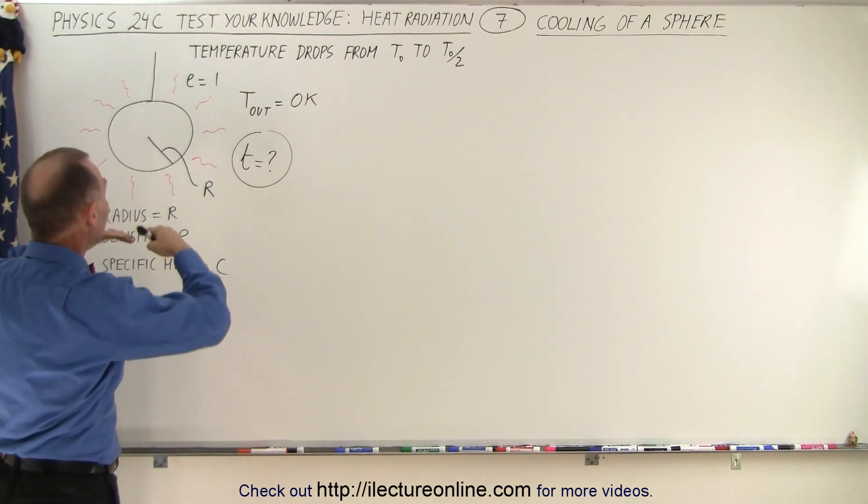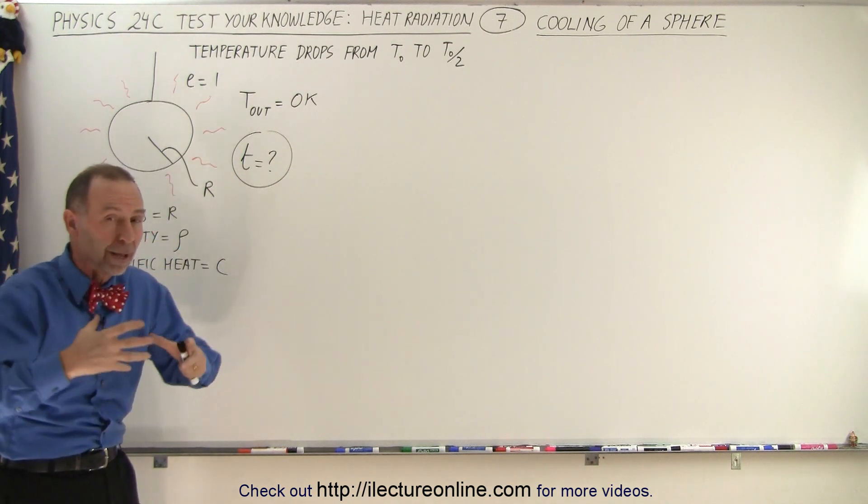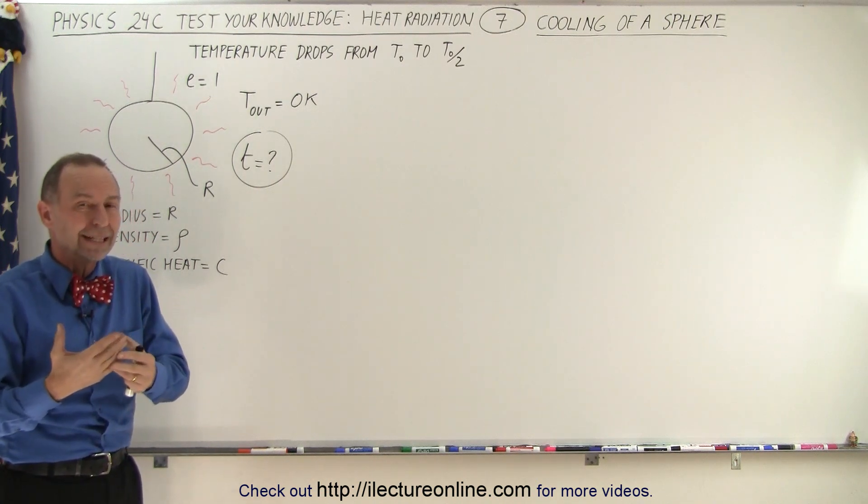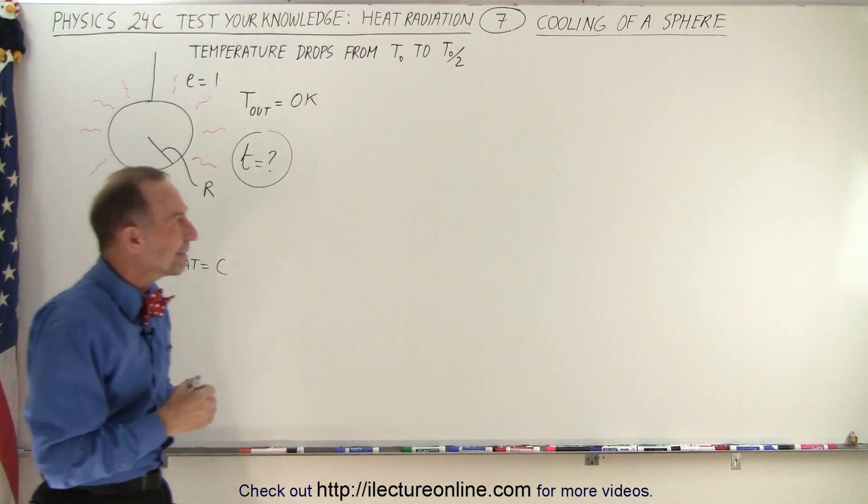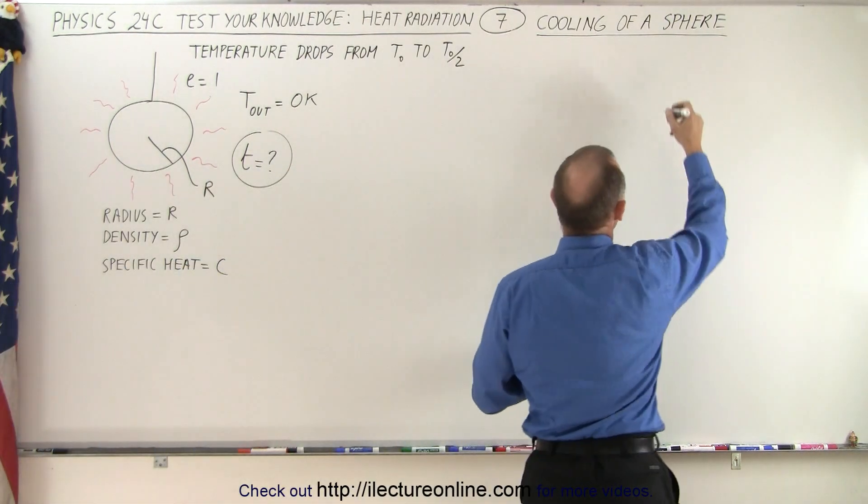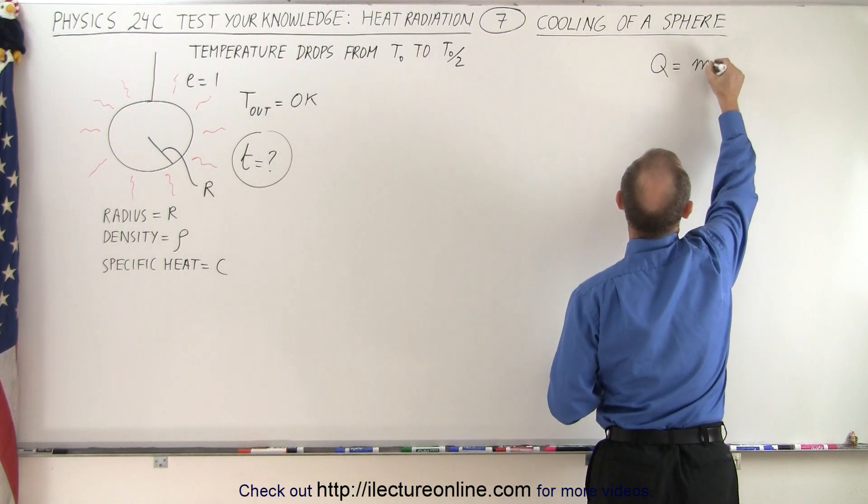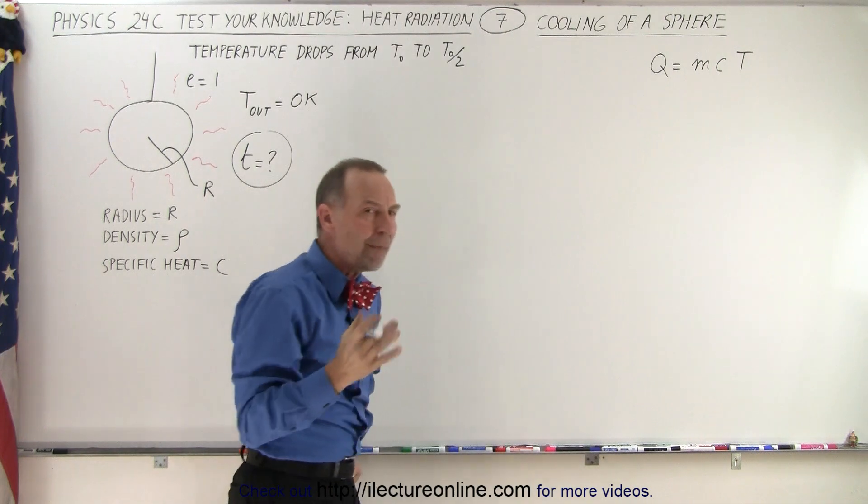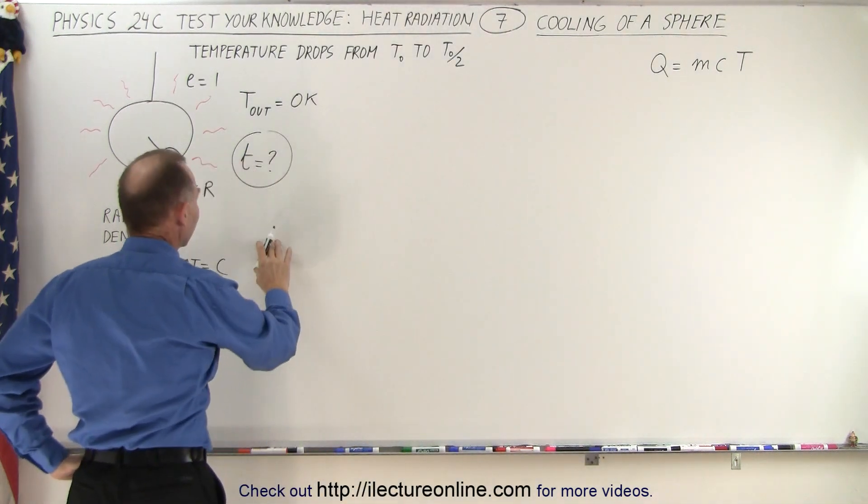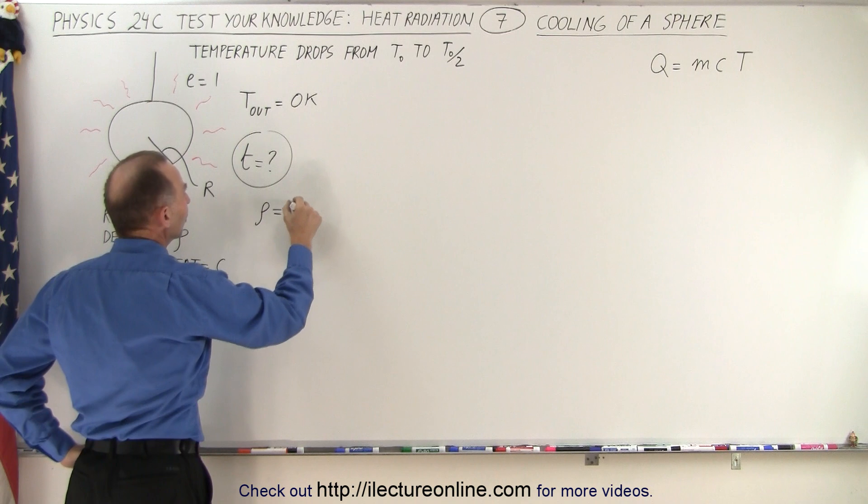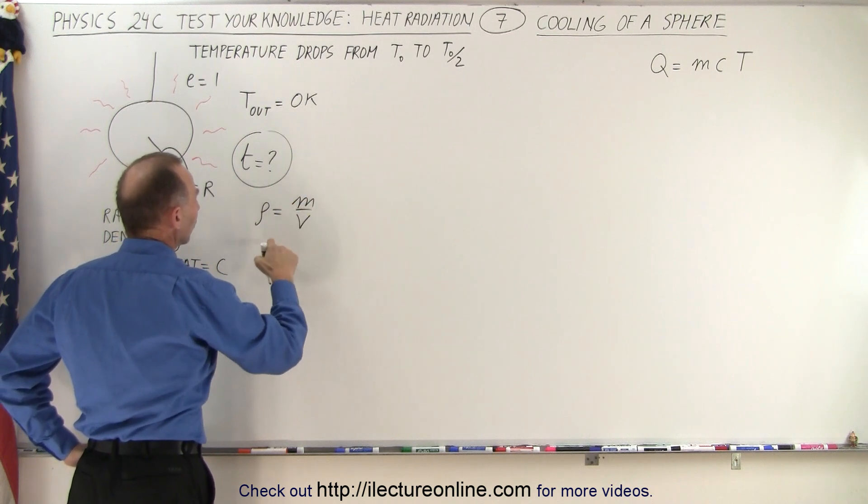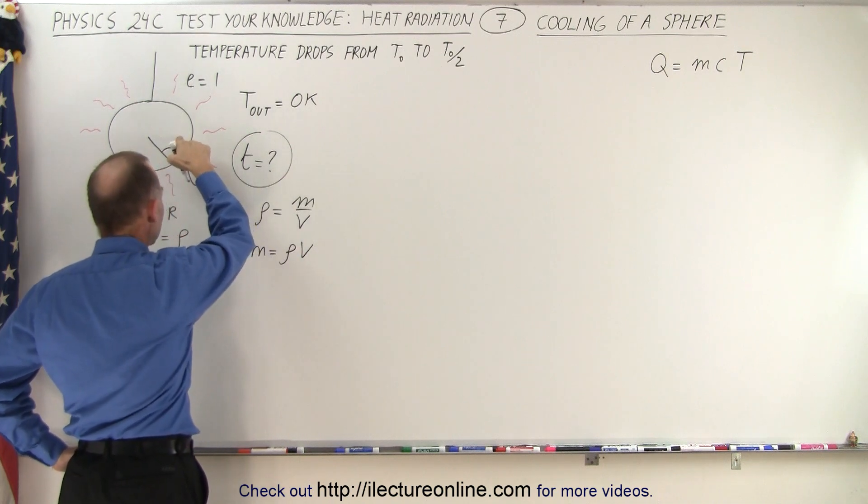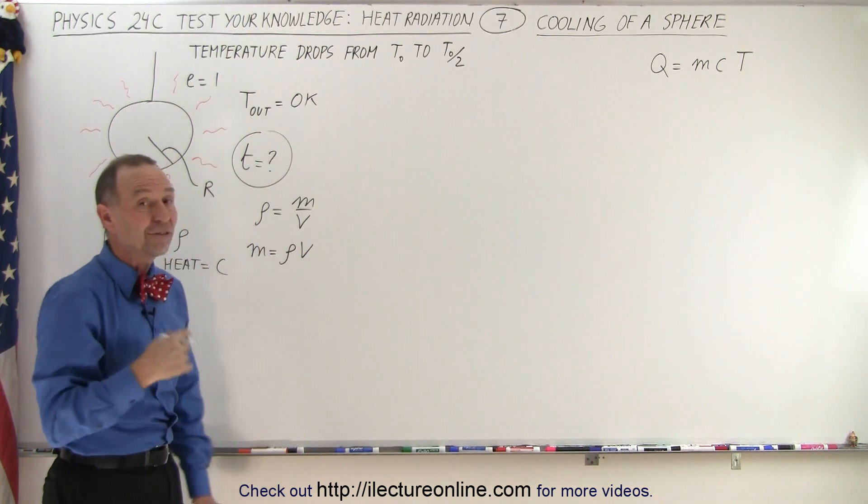First, we realize that the rate at which cooling occurs depends upon how much heat is contained within the object. So that deals with heat capacity and the calculation of heat contained within it. We can use the equation Q = mcT. Now we don't know the mass, but of course we could say that density equals mass divided by volume, so mass equals density times volume. Since we know the radius and density, we can figure out the mass.